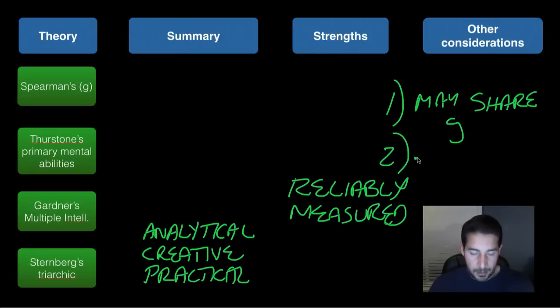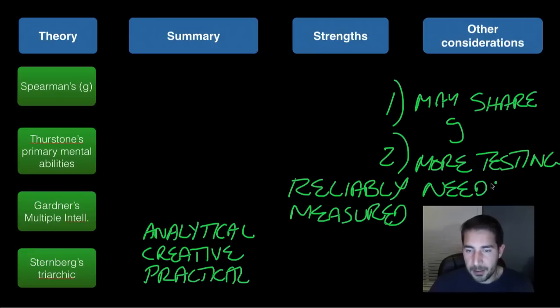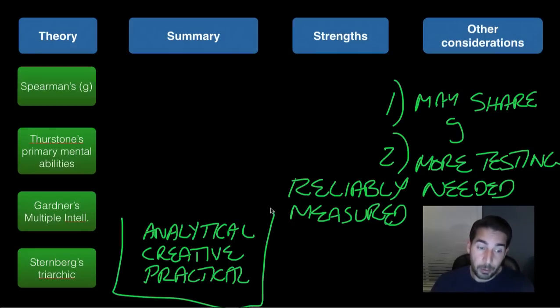And then the second thing is that additional testing is needed, more testing needed to see if they can reliably predict success. Remember, one of the things about intelligence is that it can lead to success in life. And so we got to see whether scoring well in his triarchic is going to lead you to success.